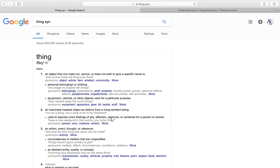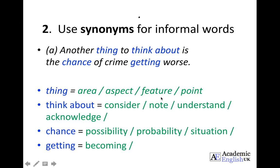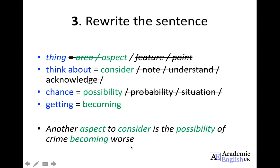You can also use Google — put in the word plus 'syn' and this will highlight a whole list from which you can pick words that are appropriate in context. Through that process, for 'thing' I could use: area, aspect, feature, or point. For 'think about' I could use: consider, note, understand, or acknowledge. For 'chance': possibility, probability, or situation. For 'getting', the most common similar word is 'becoming'. I then choose the most appropriate words — aspect, consider, possibility, becoming — and rewrite the sentence: 'Another aspect to consider is the possibility of crime becoming worse.'